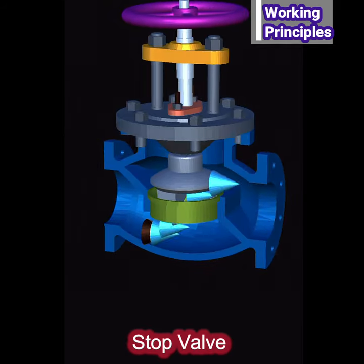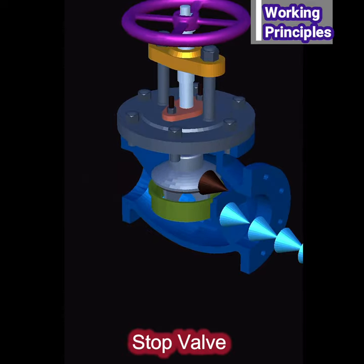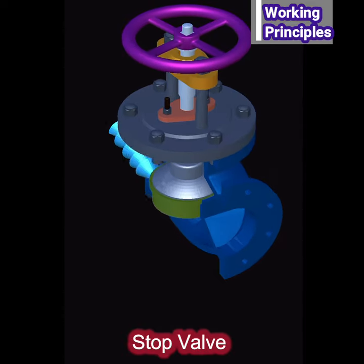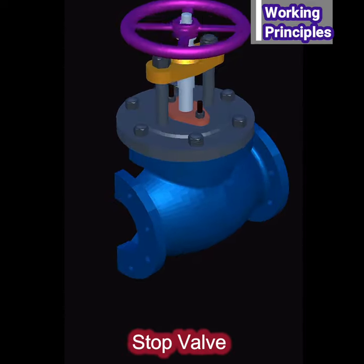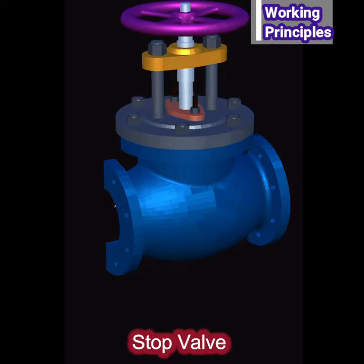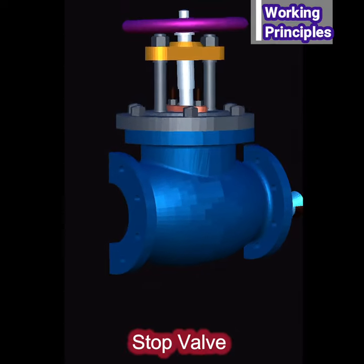In locomotive boilers, the supply of steam is regulated by means of a regulator which is placed inside the boiler and operated by a handle from the driver's cabin.